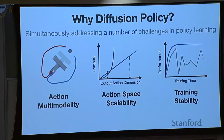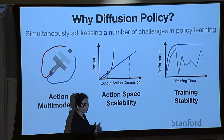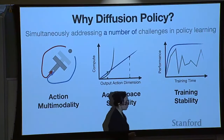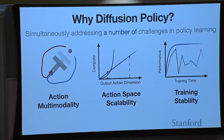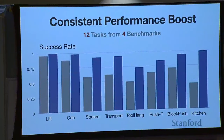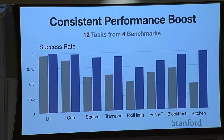In addition to the ability to model action multimodality, diffusion policy also provides a number of other advantages. It turns out to scale really well with respect to action dimensions, meaning you can make your robot predict a trajectory of actions instead of a single-step action. Diffusion policy is also much more stable to train compared to other generative models. All these benefits make diffusion policy a really practical framework for learning any robot behaviors as soon as you have the data. In our paper, we tested diffusion policy on more and more tasks, and what really surprised us is that we can always observe a consistent performance boost — sometimes a large boost, sometimes smaller, but it's always consistently able to improve performance regardless of the task.